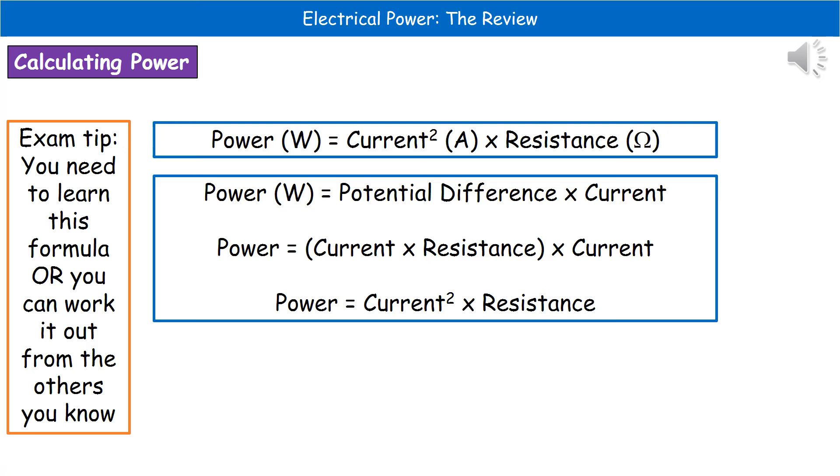Then we come on to another formula that you need to know. Or you can work this one out. That is one of the nice things - we can actually use the formula we already know in order to work this one out. You can either learn that the power in watts is the current squared times resistance, or we could work it out.